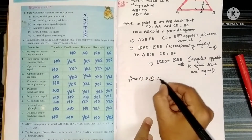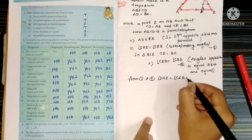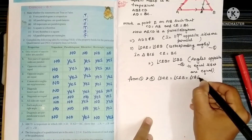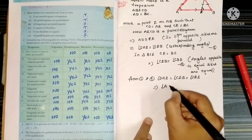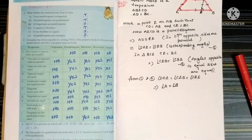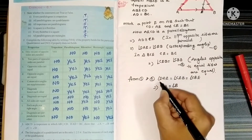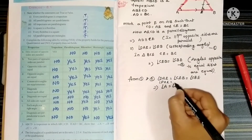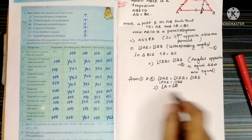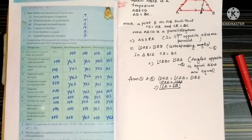From step one and step two: angle DAE equals angle CEB, which equals angle CBE. So finally, angle DAE means angle A, and angle CBE means angle B. Therefore, angle A equals angle B. That is, angle DAE equals angle CBE implies angle A equals angle B.